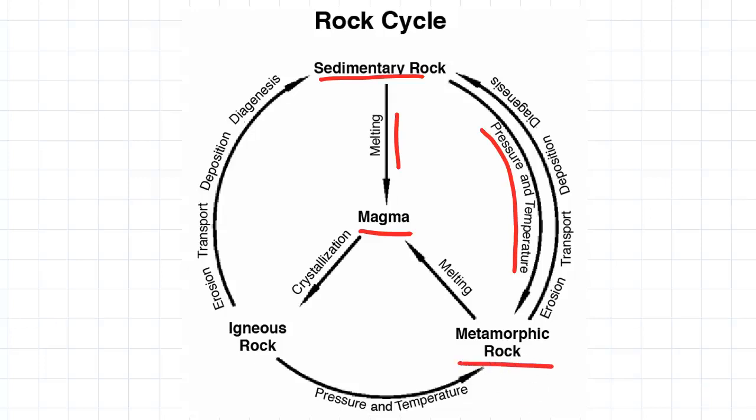So say our sedimentary rock has actually become a metamorphic rock. This metamorphic rock can then either itself continue to be subjected to really high temperatures and finally temperatures that cause it to melt and therefore it will become a magma.